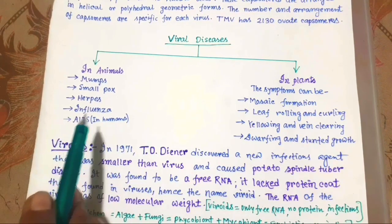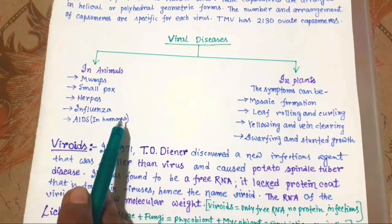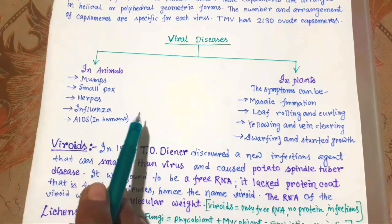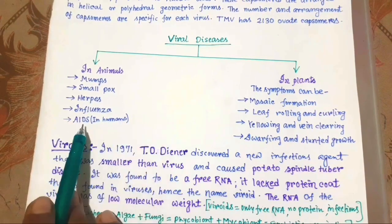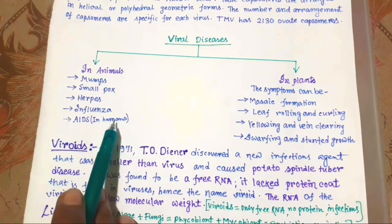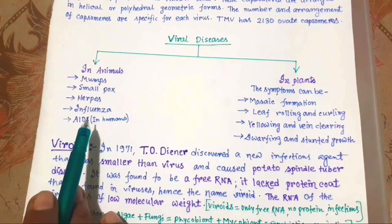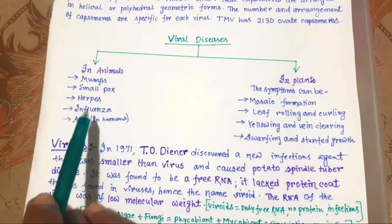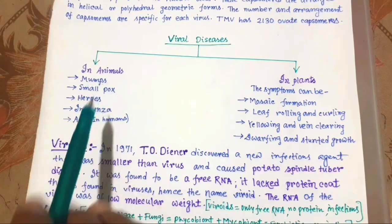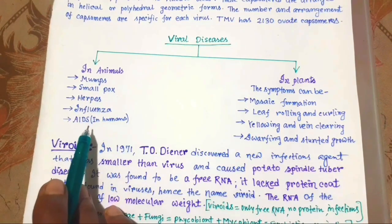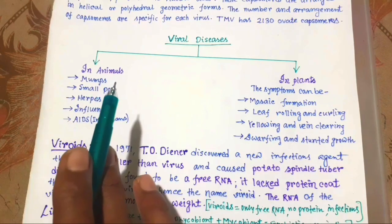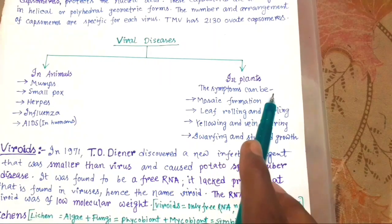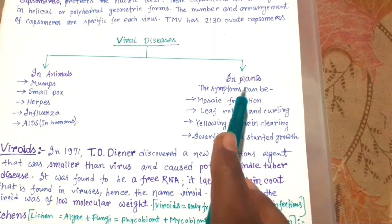AIDS in humans is caused by HIV, the Human Immunodeficiency Virus. AIDS stands for Acquired Immunodeficiency Syndrome. These are all diseases caused by viruses in animals.